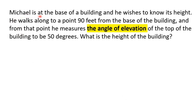Word problem number one: Michael is at the base of a building and he wishes to know its height. He walks along to a point 90 feet from the base of the building, and from that point he measures the angle of elevation of the top of the building to be 50 degrees.